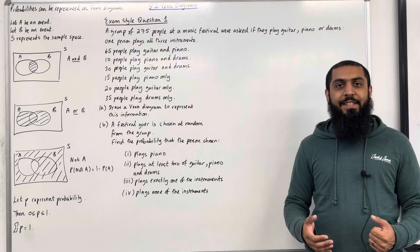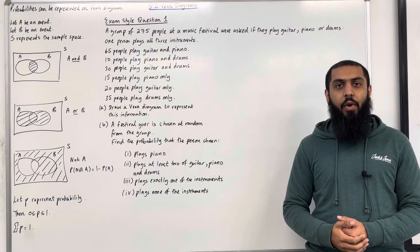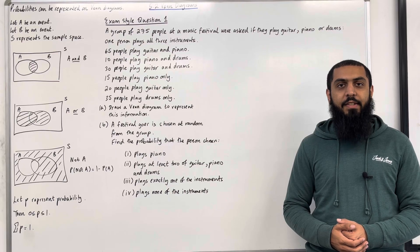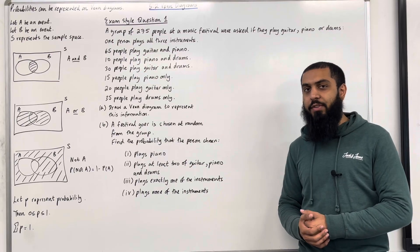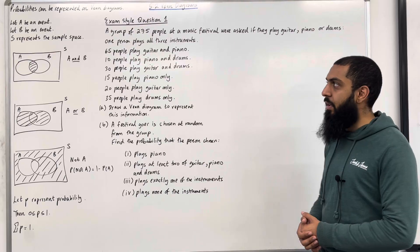Welcome back. In this teaching video, I'm looking at 5.2 Venn Diagrams. 5.2 represents Chapter 5, Section 2 of the Pearson A-Level Applied Mathematics Year 1 textbook. Let's have a look at the key facts of this section on Venn Diagrams.